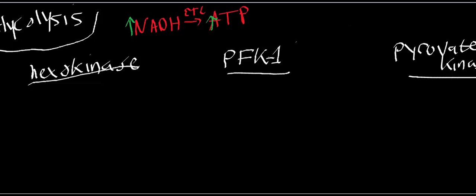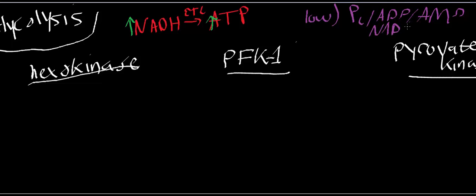The low energy charge molecules are going to be things like inorganic phosphate, ADP, AMP, and NAD+. If I've been fasting, these things accumulate because I'm not producing as much ATP or NADH. Instead, NADH is being re-oxidized to NAD+ in the respiratory chain, and ATP is being hydrolyzed to ADP by muscle contraction. If ATP hydrolysis occurs on the beta phosphate, it generates AMP.